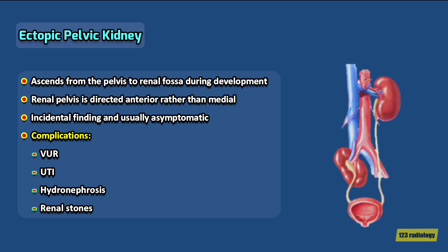Ectopic pelvic kidney. The kidney normally ascends from the pelvis to the renal fossa during its course of development. During this migration, it rotates inwards so that the renal hilum faces medially. A failure of this mechanism causes the kidney to remain in the pelvis, in which case it is called an ectopic pelvic kidney. In pelvic kidney, the renal pelvis is directed anterior rather than medial. In most cases, a pelvic kidney is an incidental finding and is usually asymptomatic.